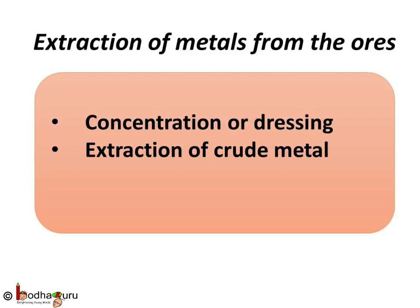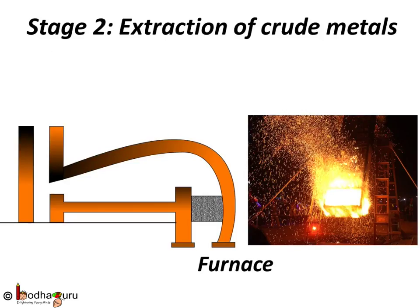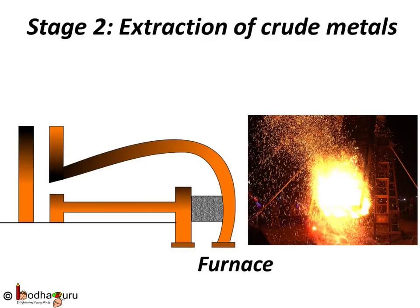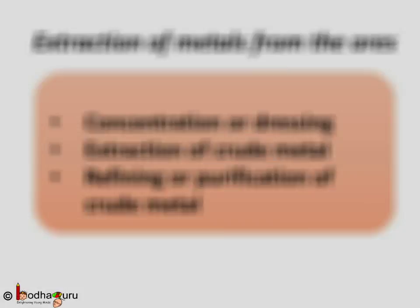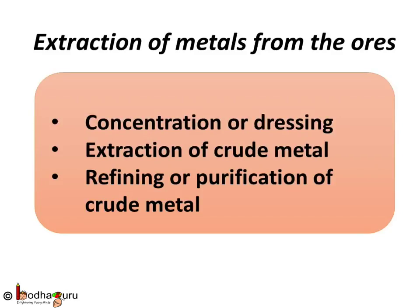After enrichment of ore, Stage 2 involves extraction of crude metal. Different methods are used for different metals based on their reactivity, and we obtain crude metal from this stage. The last stage involves refining or purification of crude metal.